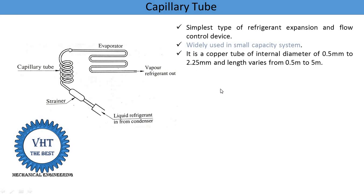The capillary tube has a certain diameter and certain length. It is available in different diameters and lengths. The copper tube has an internal diameter of 0.5 mm to 2.25 mm, and its length varies from 0.5 meters to 5 meters. Diameter is given in mm and length is in meters.